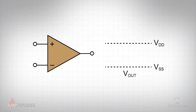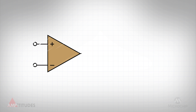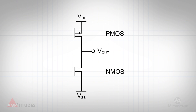As the name implies, rail-to-rail output indicates that the output voltage range of the amplifier can span one supply rail to the other. This ability is a function of the design of the output stage of the amplifier and is also dependent on the loading conditions. For the purposes of this discussion, we will focus on amplifiers that implement a CMOS output stage, as shown here. An output stage implemented with complementary CMOS FETs is limited in terms of the output voltage range due to the on resistance of the transistors.